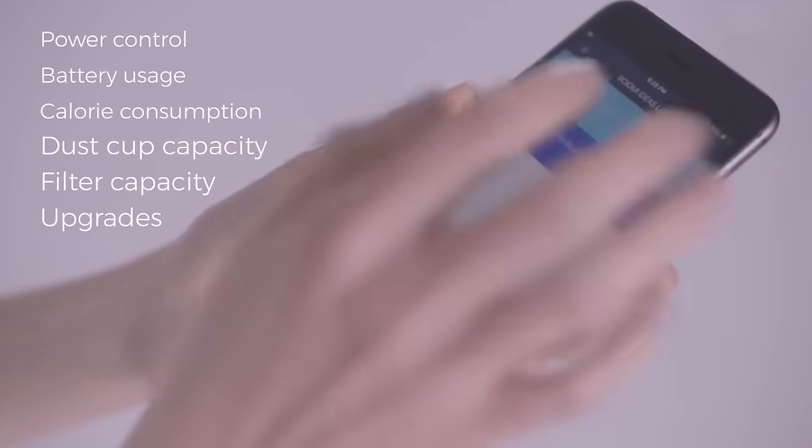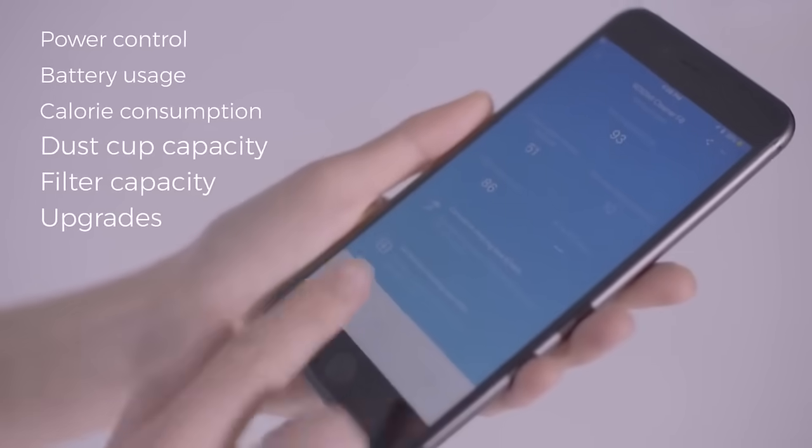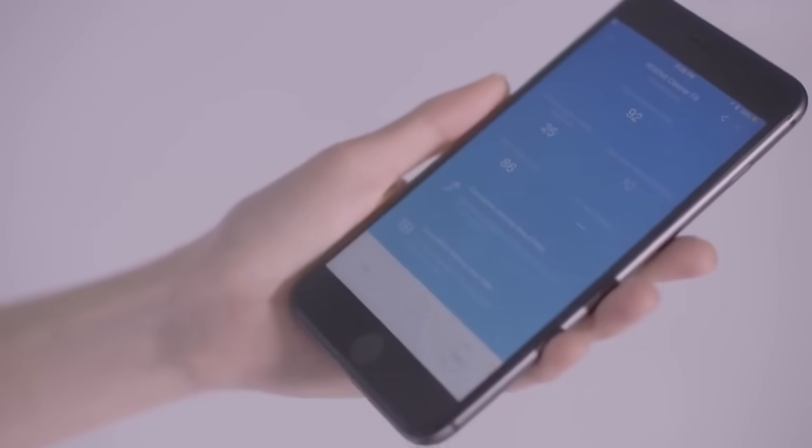With Bluetooth technology, you can connect the F8 to your smartphone, check battery usage, filter capacity, and surprisingly, even know how many calories you've burned off working out on the ROIDME.